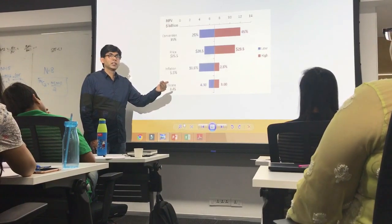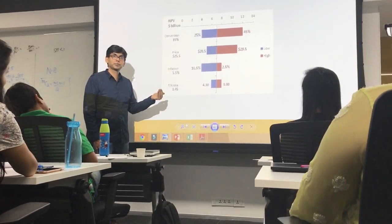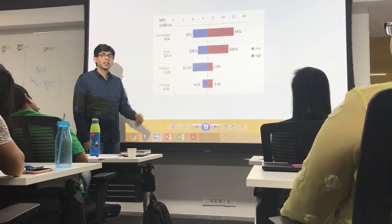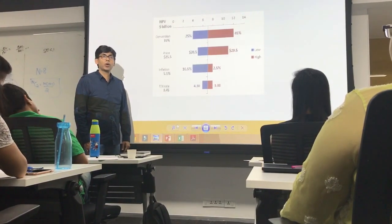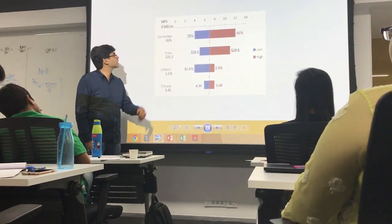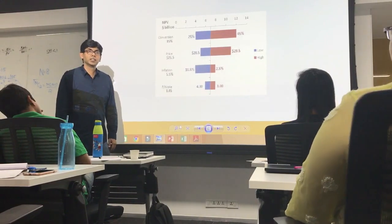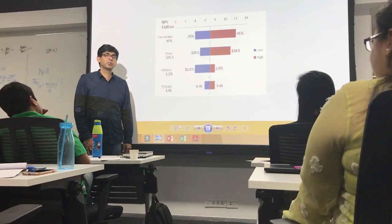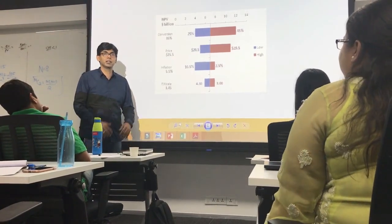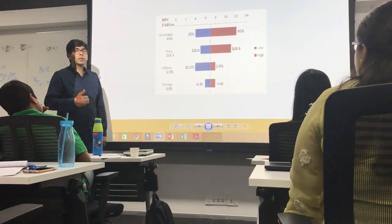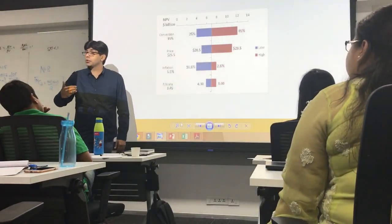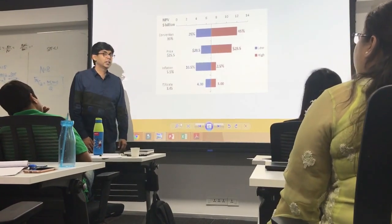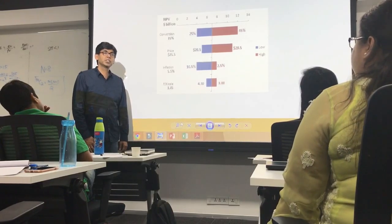Now, if I see all these individual risks based on this diagram and based on the impact assessment, can I say I am most vulnerable or my project objectives are most vulnerable to the risk which is conversion? If my marketing team is not able to perform, my project objectives will be impacted very badly. Similarly, the second one would be pricing. My project objectives are also vulnerable to pricing. Then the third one would be inflation and the fourth one will be foreign exchange rate.